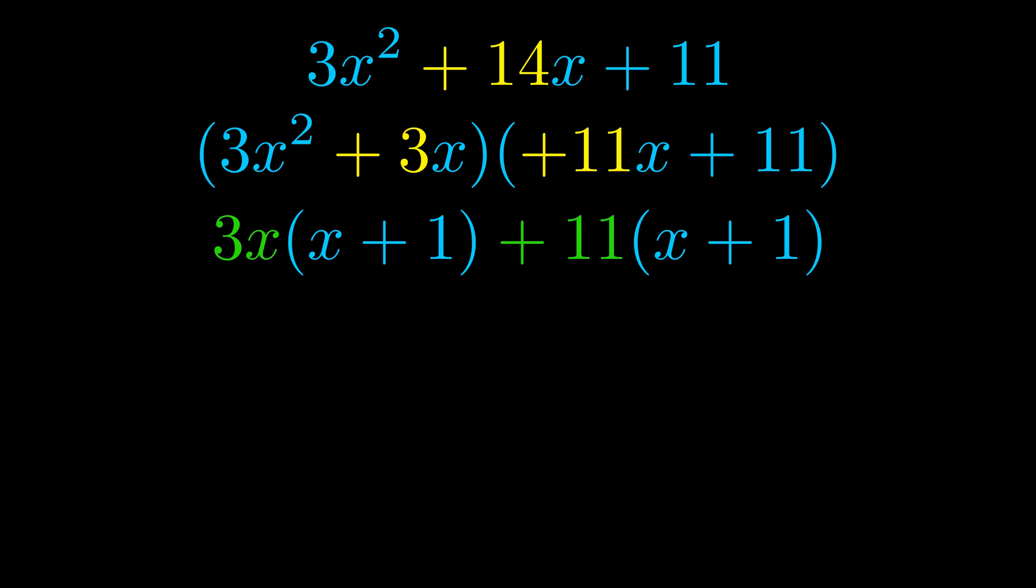Notice also how what remains inside of the parentheses is the same in both cases. The blue values are the same. Those blue values will become one of our factors and we will combine the two green values, the GCFs that we pulled out, to get the other one. And that is our fully factored equation.